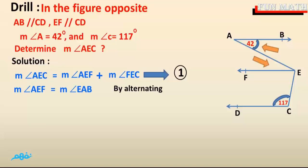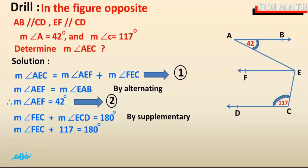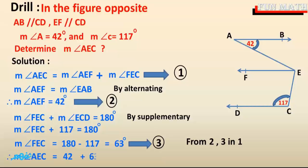Measure of angle AEF is equal to measure of angle EAP by alternate angles, so measure of angle AEF equals 42 degrees. Measure of angle FEC plus measure of angle ECD equals 180 degrees by supplementary, so measure of angle FEC plus 117 equals 180 degrees, giving measure of angle FEC equals 63 degrees. Therefore, from the two results, measure of angle AEC equals 42 plus 63 equals 105 degrees. Now we are reaching the end of our lesson. Thank you and goodbye.